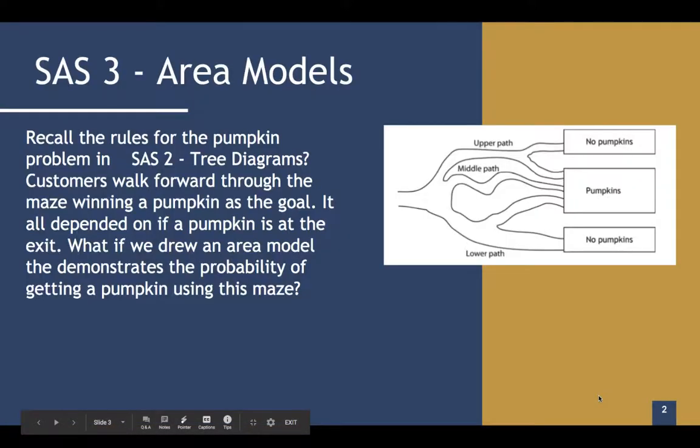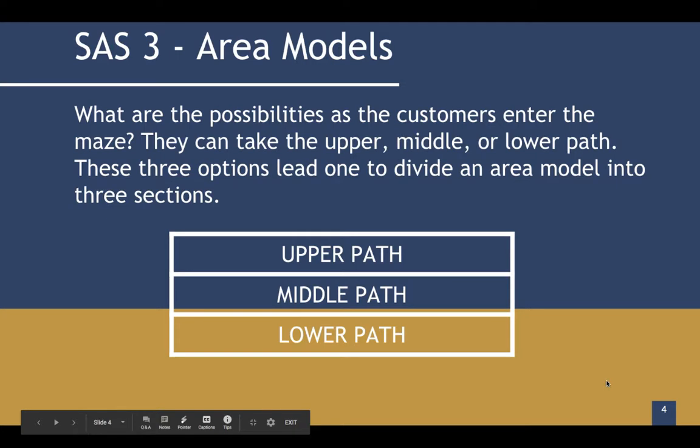Now our area model is simply that: it's a square or rectangular section that shows portions of each one, the results at the end of your path. What are the possibilities? Customers into the maze can take the upper, middle, or lower path. And these are the three options that lead to dividing an area model into three sections.